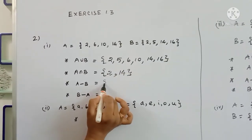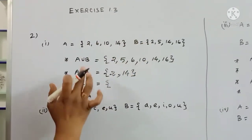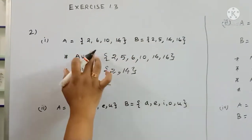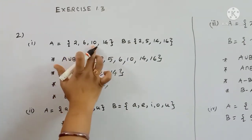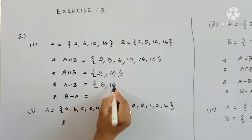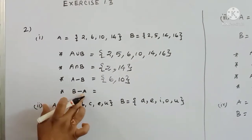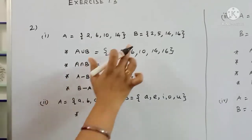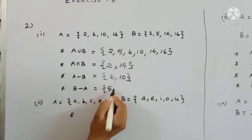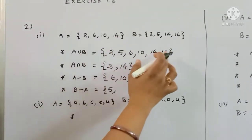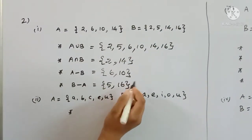For A minus B, we need elements in A not in B. In this case, those elements are 6, 2, and others. Next, B minus A — take elements in B not in A.